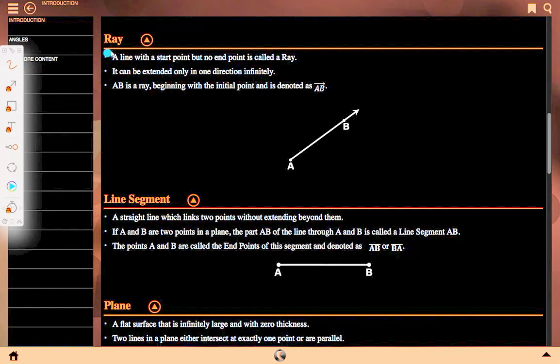Ray: A line with a start point but no end point is called a Ray. It can be extended only in one direction infinitely. AB is a ray beginning with initial point and is denoted as AB ray. Here A is point fixed but B is not fixed, it can extend infinitely.